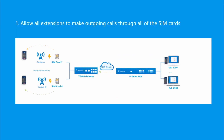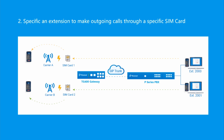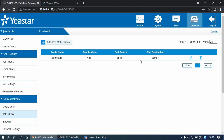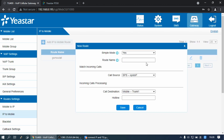All extensions of the P-Series PBS can now make outbound calls through all of the SIM cards of the TG Gateway. Scenario 2: Specify an extension to make outgoing calls through a specific SIM card. There is no need to create a new outbound route on P-Series PBS — just add a new IP-to-Mobile rule on TG Gateway.